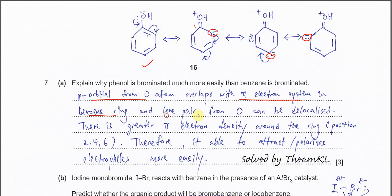The explanation: p orbital from oxygen overlaps with the pi electron system in benzene ring. Because of this overlapping, the lone pair from oxygen can be delocalized. There will be a greater pi electron density around the ring at positions 2, 4, 6. Therefore, it's able to attract electrophiles more easily than the benzene ring.